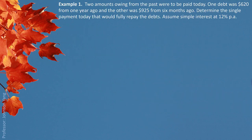Example 1. Two amounts owing from the past were to be paid today. One debt was $620 from one year ago and the other was $925 from six months ago. Determine the single payment today that would fully repay the debts. Assume simple interest at 12% per annum.